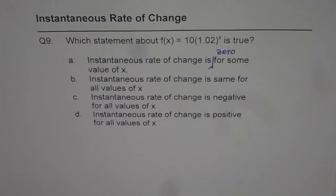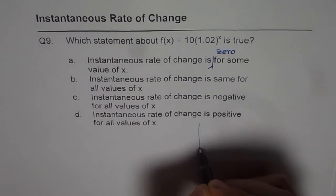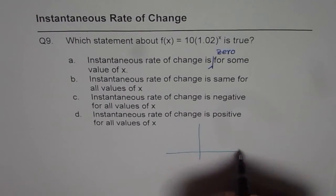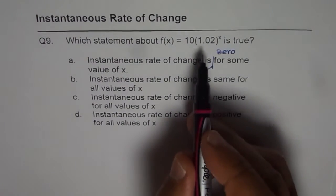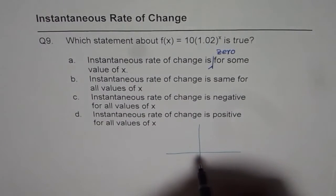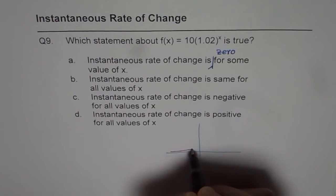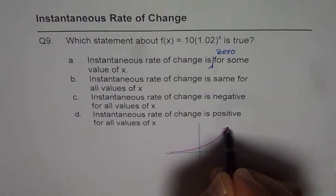You can pause the video, answer and then look into my suggestion. Well, the function given to us is exponential function, right? So if you want to sketch it, it will look like what? 1.02 means greater than 1 and therefore it will always be increasing, correct? Like this.